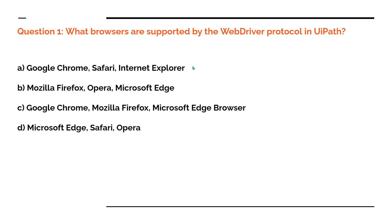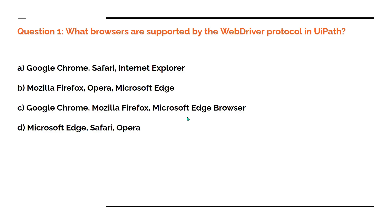The options are: A - Google Chrome, Safari, Internet Explorer; B - Mozilla Firefox, Opera, Microsoft Edge; C - Google Chrome, Mozilla Firefox, Microsoft Edge; D - Microsoft Edge, Safari. Tell me which one is the right answer. Pause this video and start commenting your answer in the comment section.